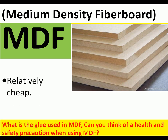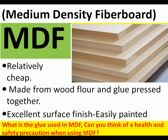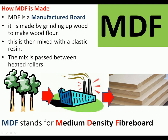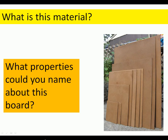MDF — medium density fibreboard — is cheap and made from wood flour and glue pressed together. It has an excellent surface finish and is easily painted. The problem is the glue inside can make it difficult to work with. MDF is manufactured by grinding up wood to make wood flour, mixing it with a plastic resin, and passing the mix through heated rollers in a factory.